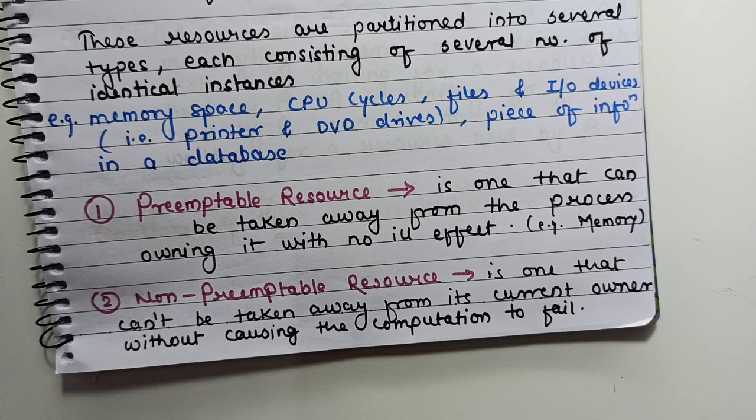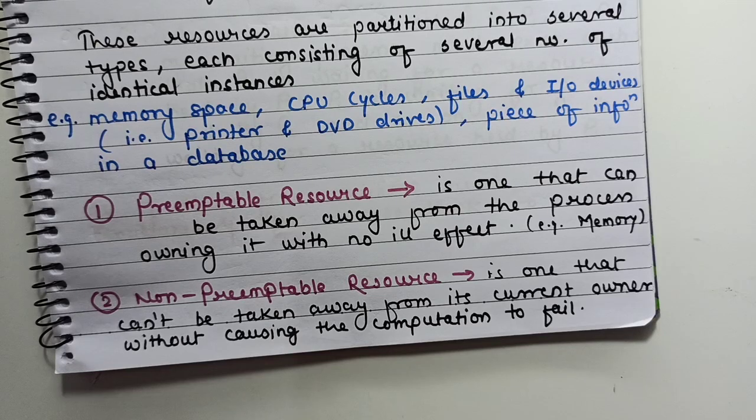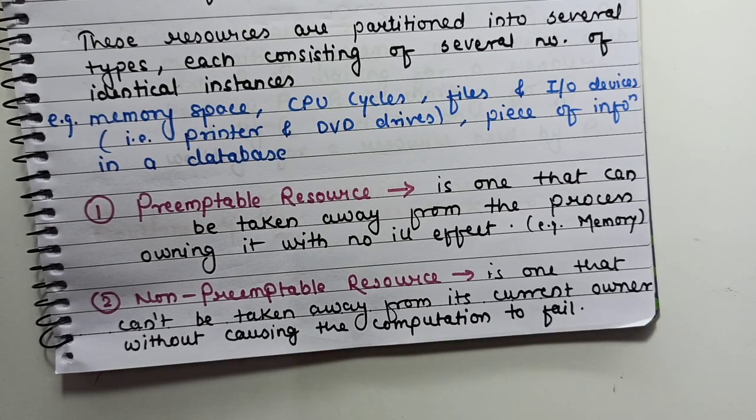The deadlock can also occur with multiple hardware resources. Consider one printer and one DVD drive. Suppose that process 1 is holding the DVD and process 2 is holding the printer. In the very next time, process 2 is requesting the DVD and process 1 is requesting the printer. Again, there is a deadlock. We had only one printer and one DVD drive already allocated to different processes, now they are demanding different resources held by another process in the set.